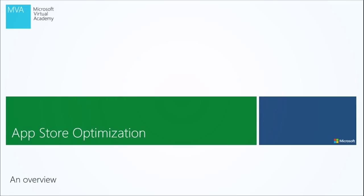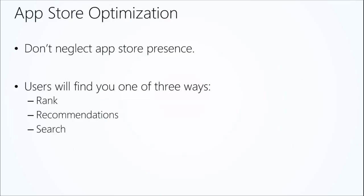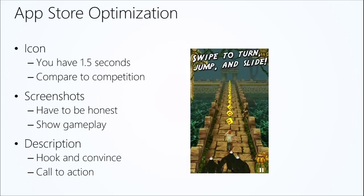App store optimization means your presence in the app store — and when I say app store, I mean any app store: the Windows Store, the Windows Phone Store, the Xbox page, whatever gateway they use to get to your app. In a digital distribution age, no matter how they find out about your app — a friend's recommendation, being number one in charts, or search — they're always going to be funneled through that page, which has your icon, your screenshots, and your description. The same general principles apply across stores, though some keywords may work better in one store versus another.